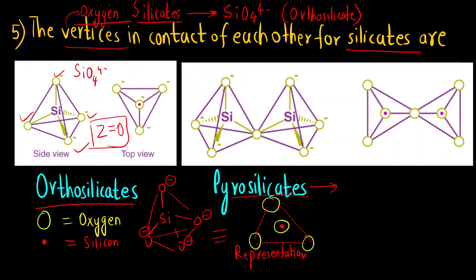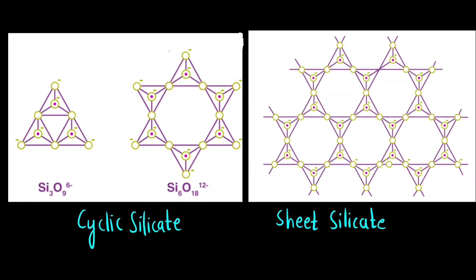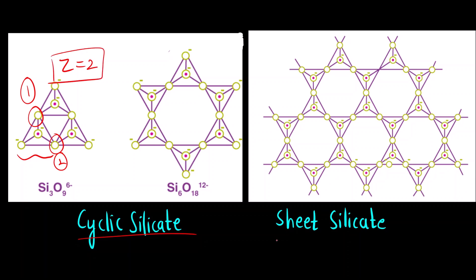Second is pyrosilicate — here two units share one common oxygen between them, so Z = 1. Third is cyclic silicate — for one unit, two oxygens are in contact, so Z = 2. Fourth is sheet silicate — considering one unit, three oxygen atoms are shared, so Z = 3.